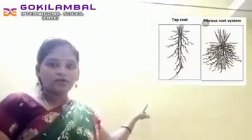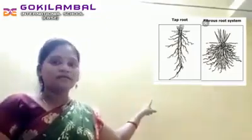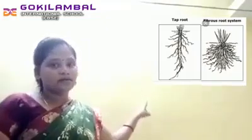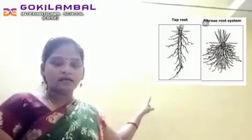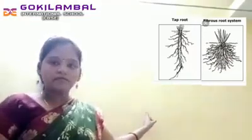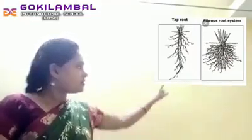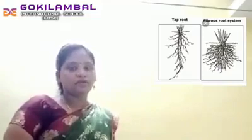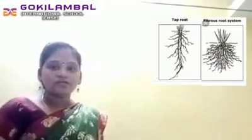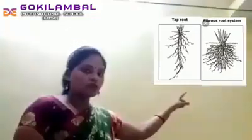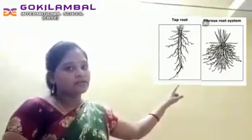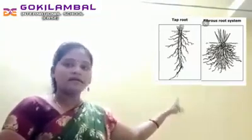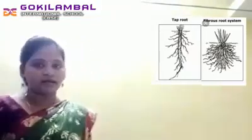The taproot is present only in dicot plants. For example, mango tree and neem tree. The second one is fibrous root. The fibrous root is present only in monocot plants. For example, wheat plant and rice plant. These are the examples.